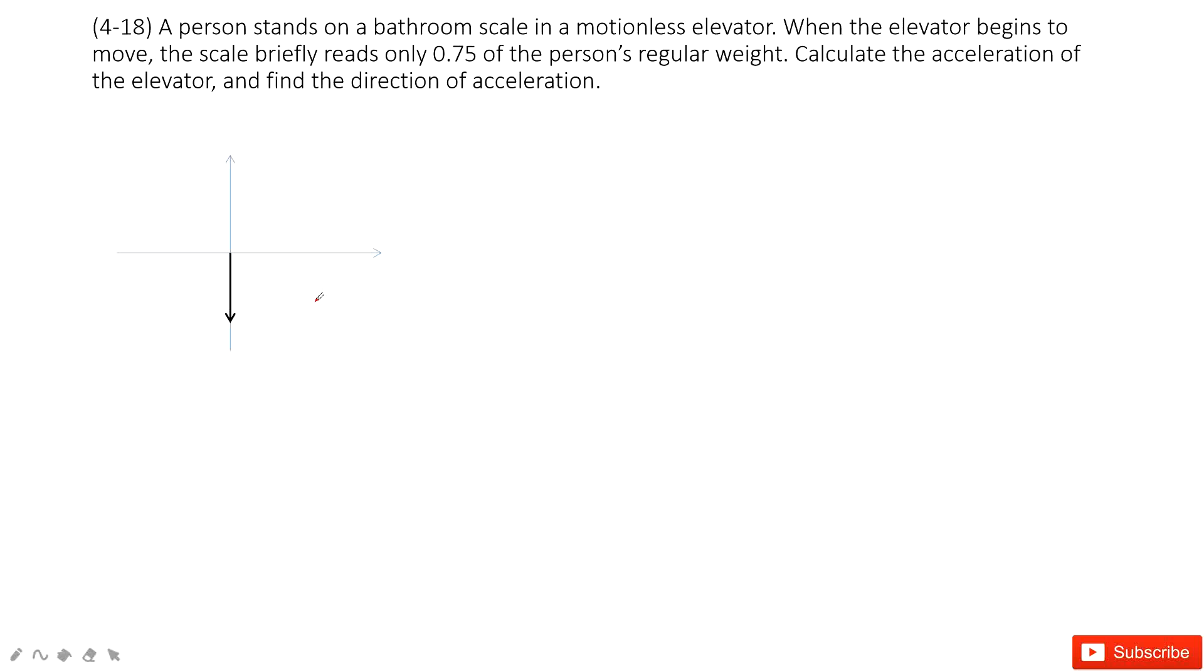First, we look at the person. There must be a force acting on it: gravity. And then there's the normal force from the scale supporting the person, which we call Ft.